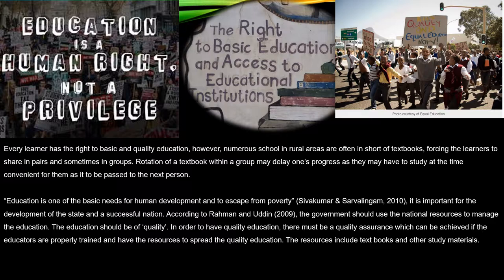Education is one of the basic needs for human development and to escape from poverty. This is supported by Sifakuma and Savalingam in their writing of 2010. It is important for the development of the state and a successful nation. According to Roman and Yodin, the government should use national resources to manage education. The education should be of quality, which can be achieved if educators are properly trained and have resources to spread quality education, including textbooks and other study materials.